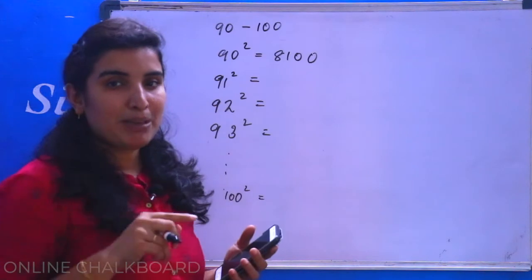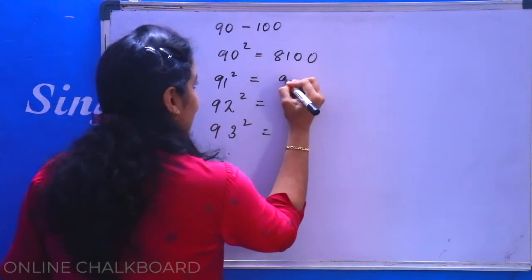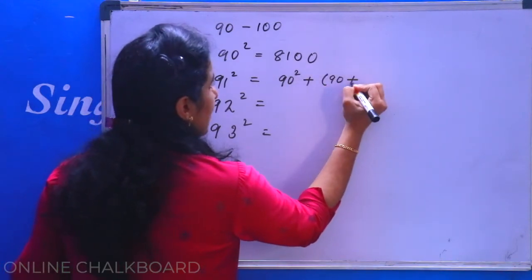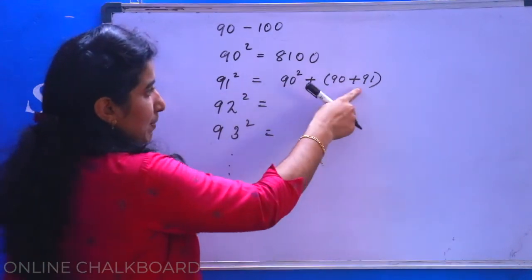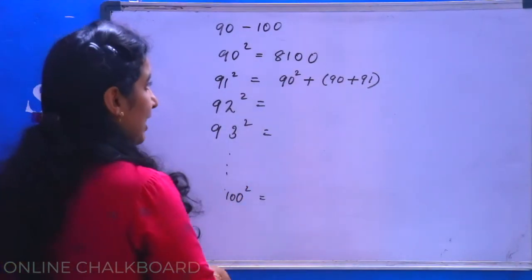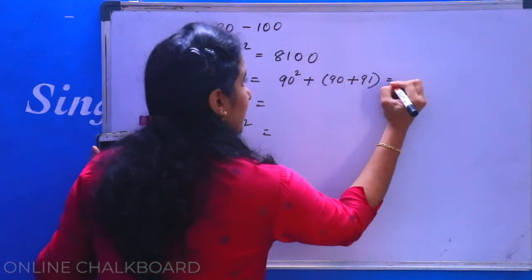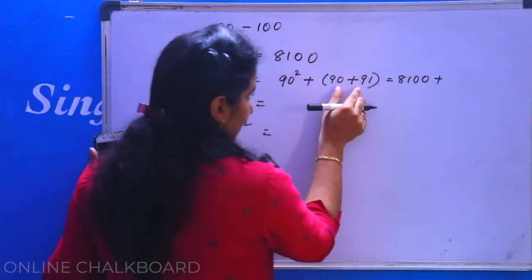Then we have 90 square plus 90 plus 91. 90 square is 8100.